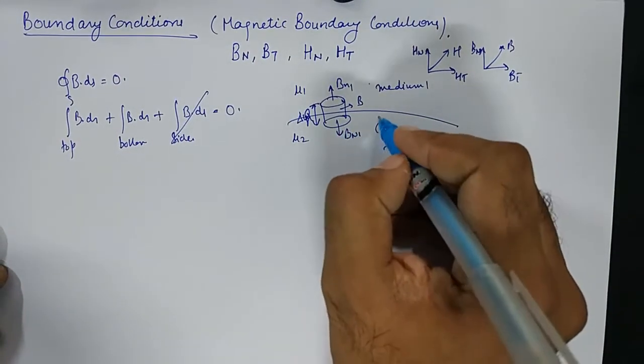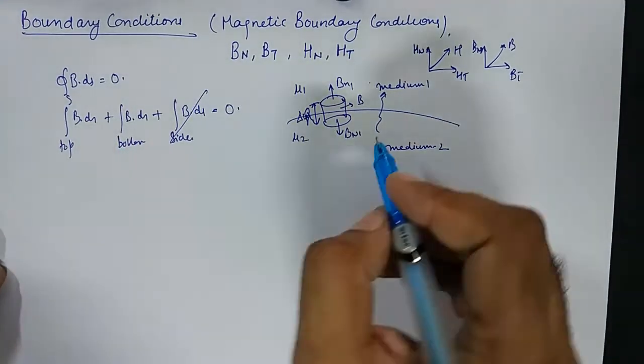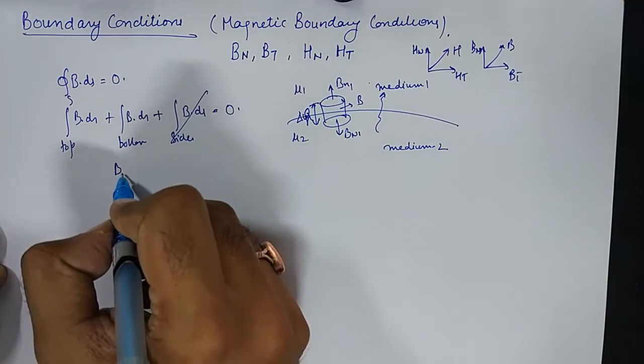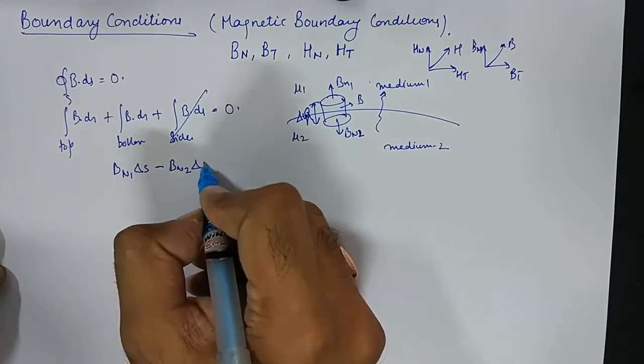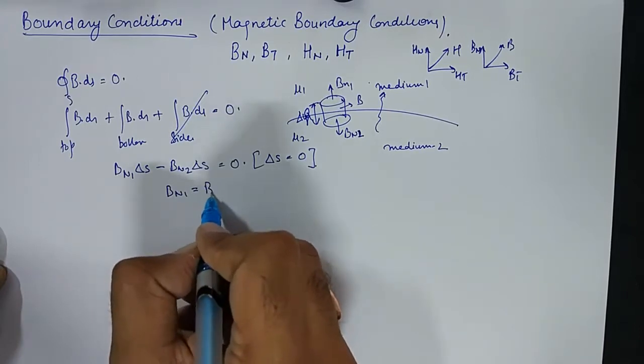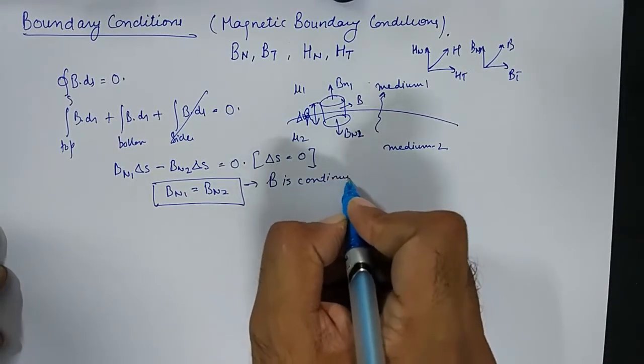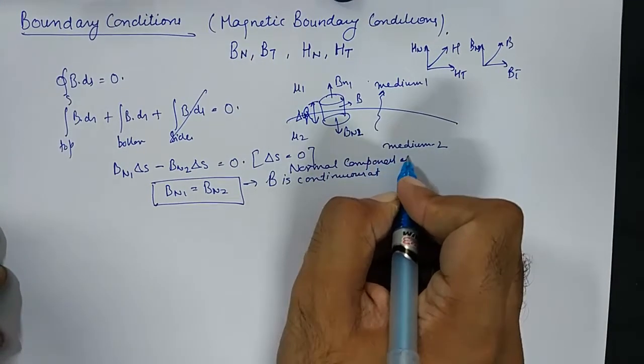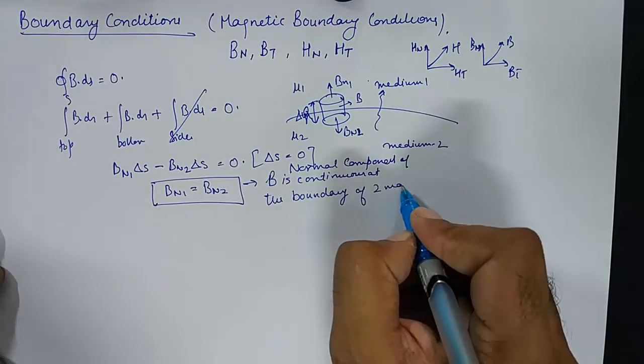We need to find the direction in going from either medium 1 to 2 or from 2 to 1. For that we will need to reverse the flux density's direction in one case. So I will do Bn1 delta S minus Bn2 delta S equal to 0. And delta S cannot be 0. So what I am left with is Bn1 is equal to Bn2, which clearly states that normal component of B is continuous at the boundary of two magnetic materials.